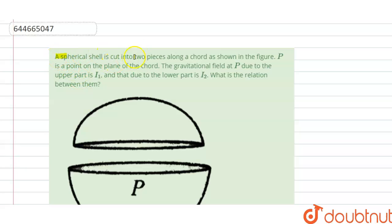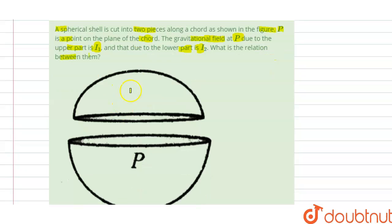Hello students. Today our question is: a spherical shell is cut into two pieces along a chord as shown in the figure. P is a point on the plane of the chord, and the gravitational field at P due to the upper part is i1 and due to the lower part is i2. What is the relation between them?